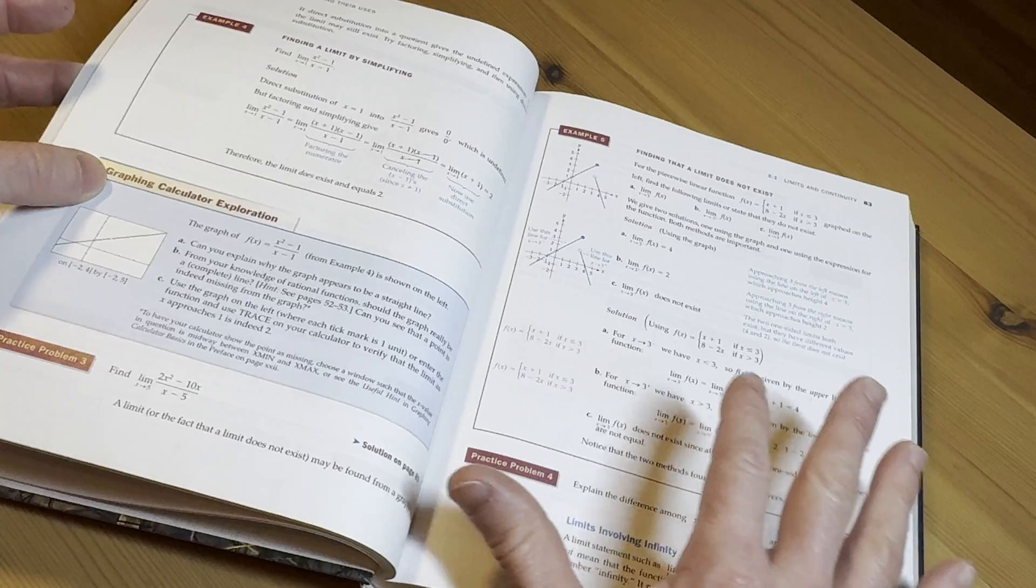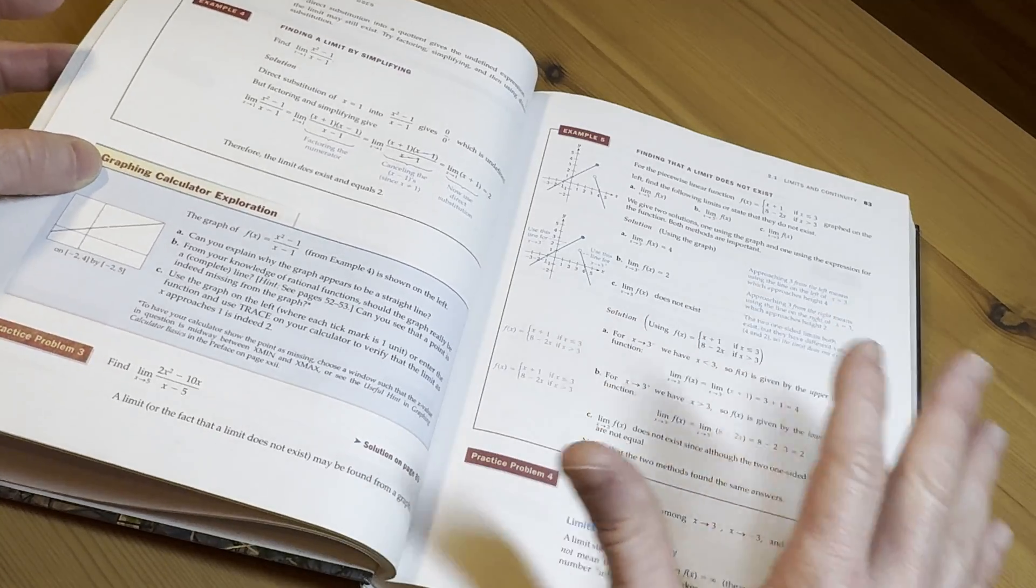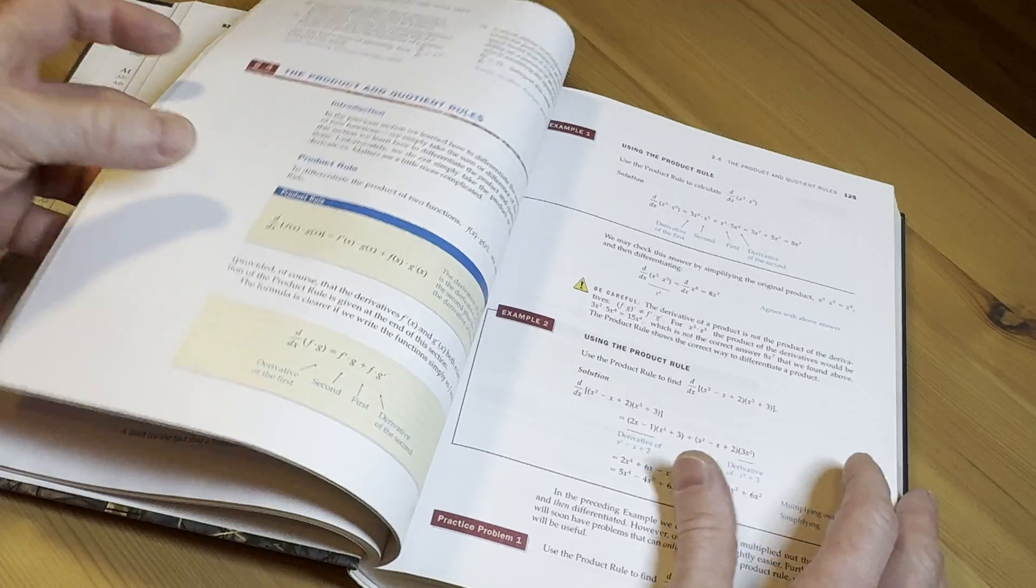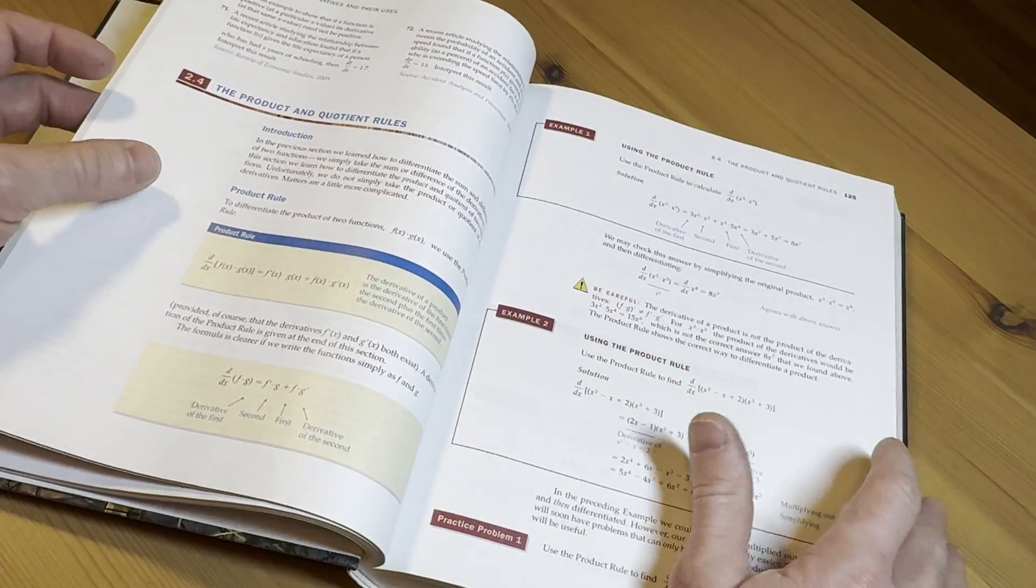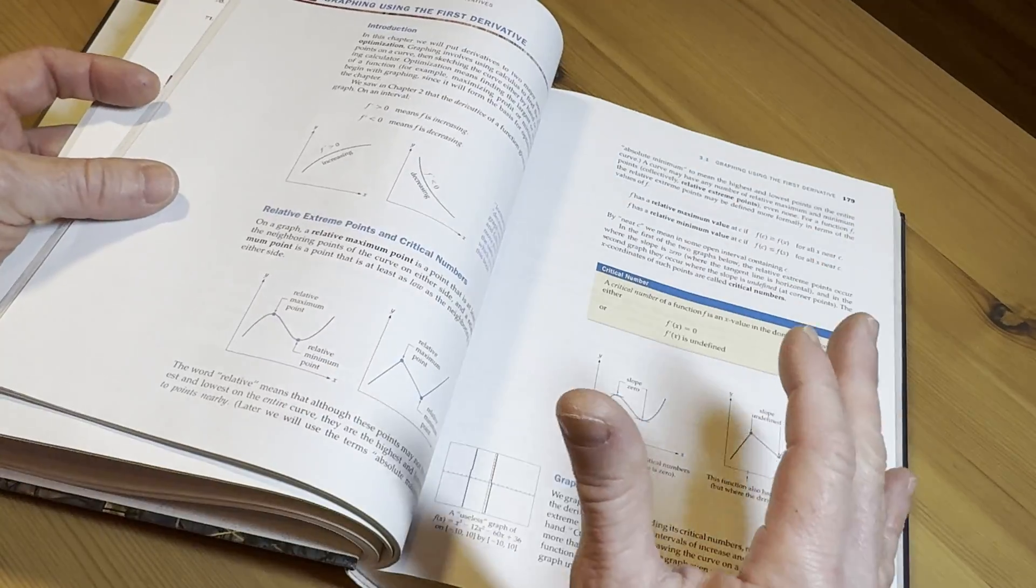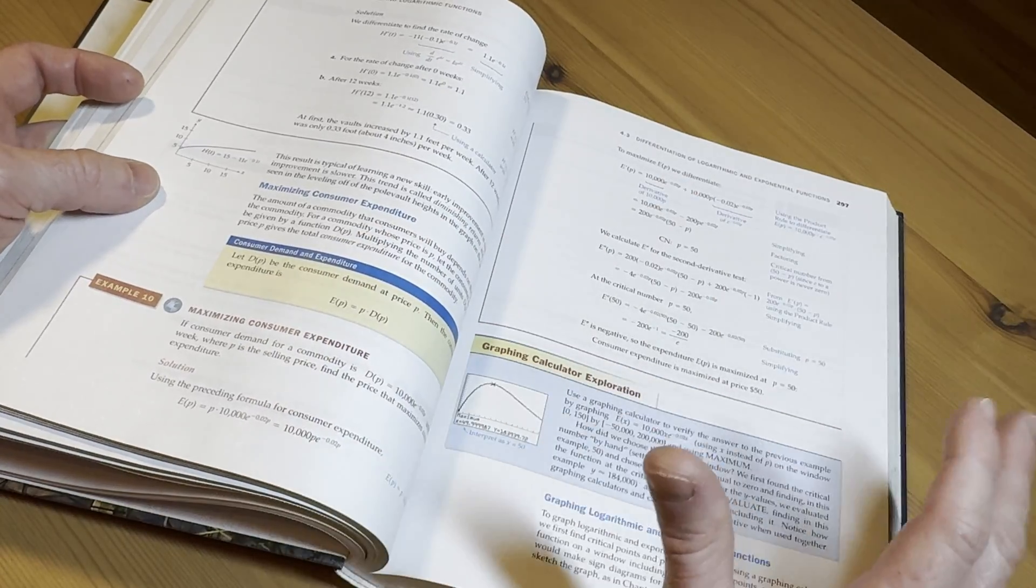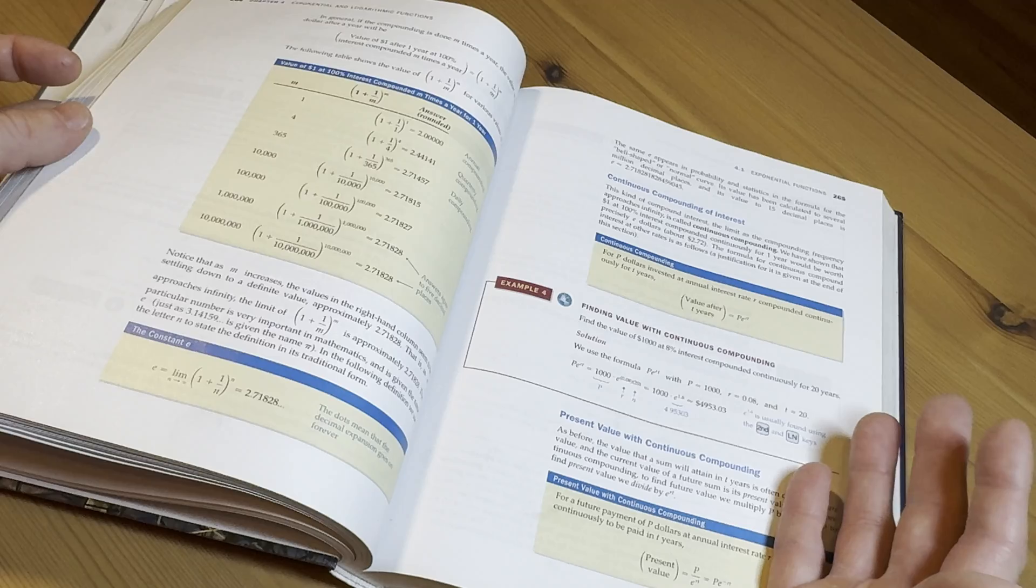For example, I would spend a full day on like the product rule or the quotient rule or like a full day on the chain rule or like a full day where I do like 15 careful examples. So I would do a lot of examples and do them slowly and explain everything really, really carefully because the students, all they had was algebra.